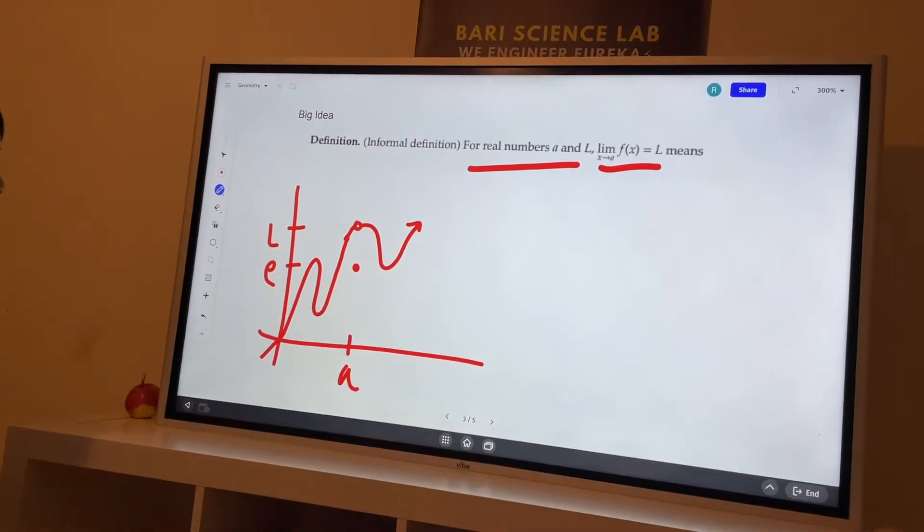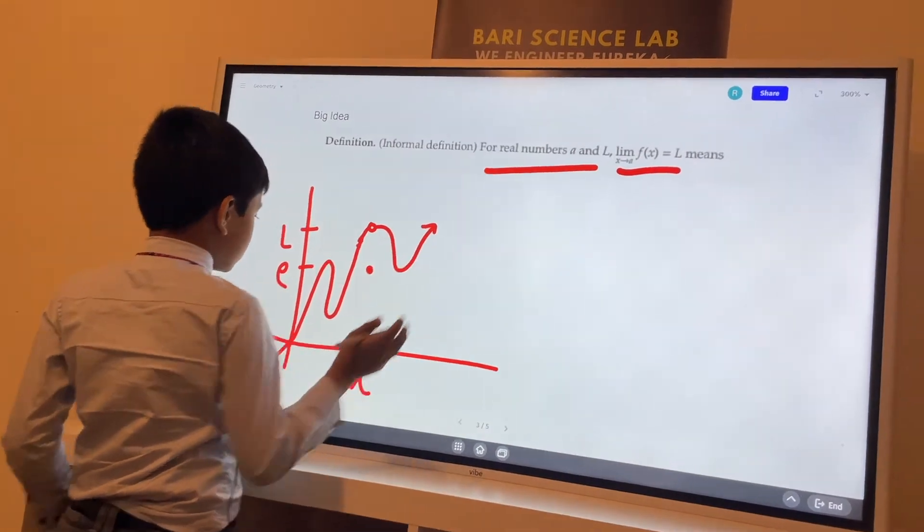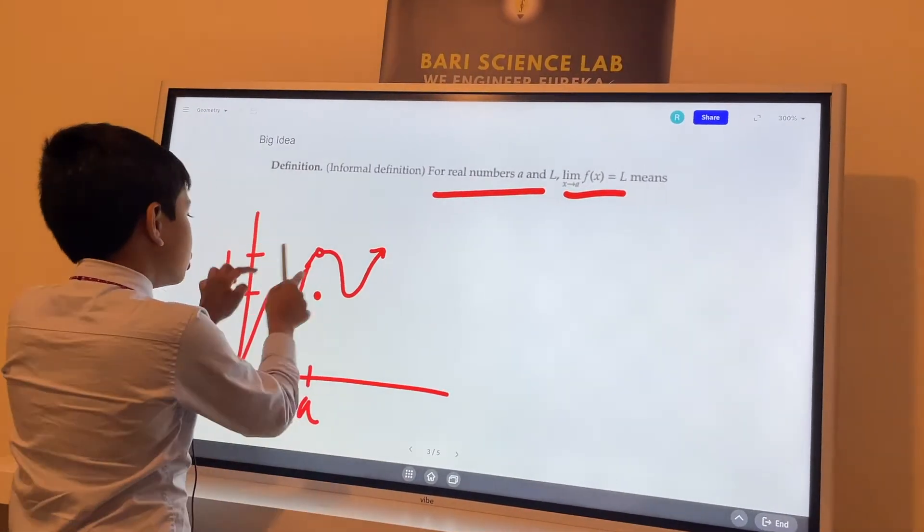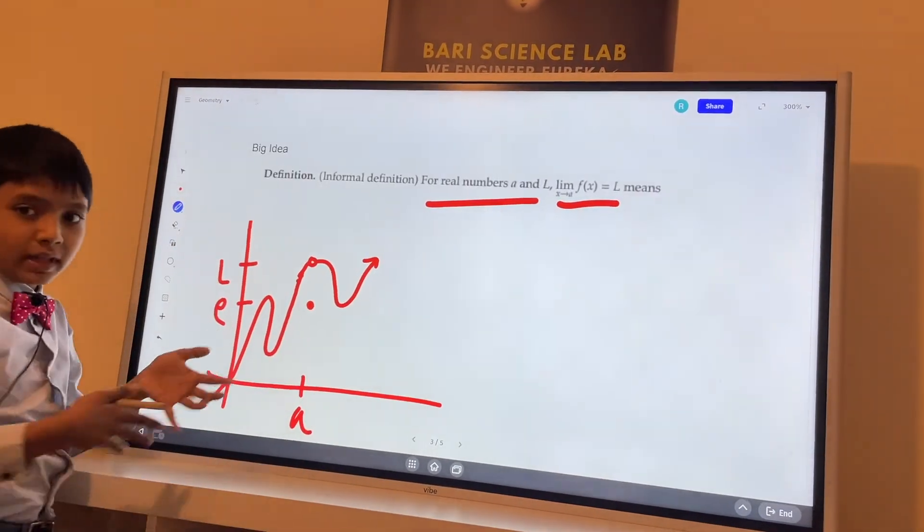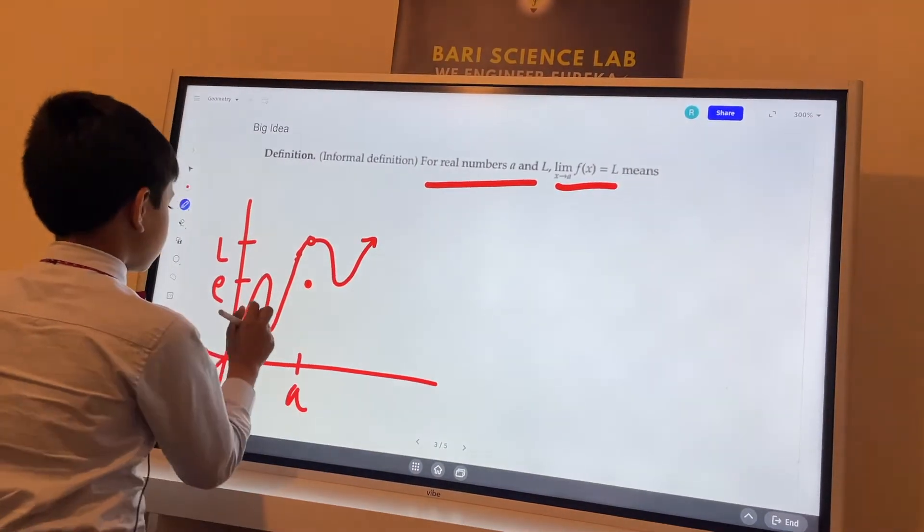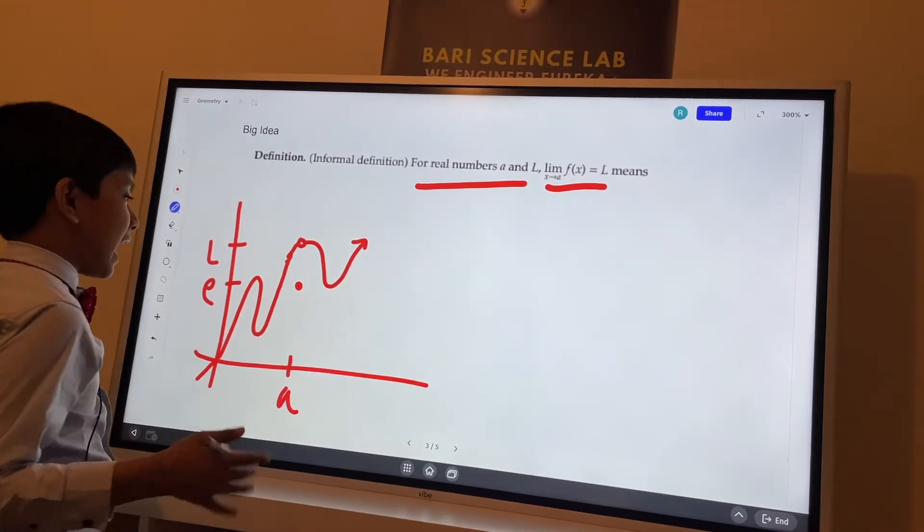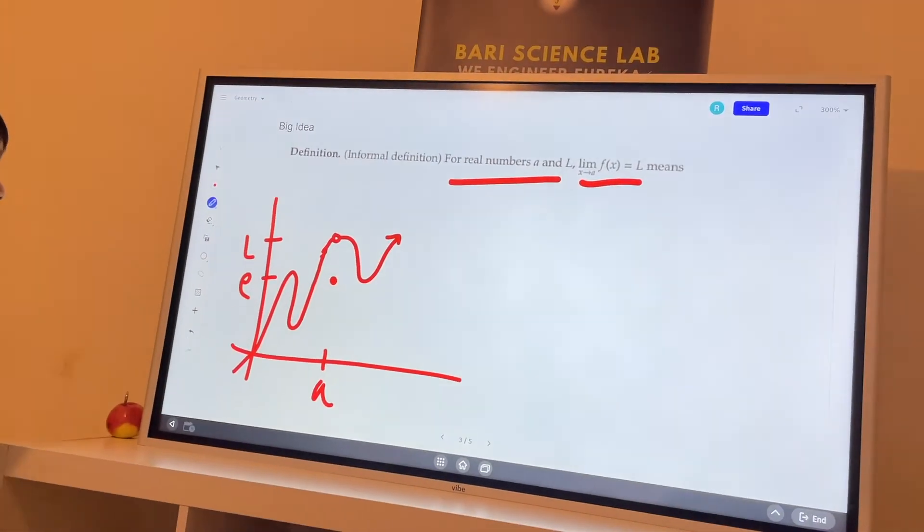So here it shows that as you get closer and closer to a, as you zoom in and zoom in and zoom in closer and closer, then that means that we will get an answer closer and closer and closer to l to come out.